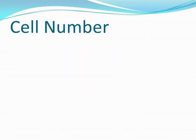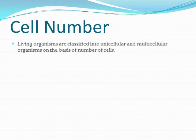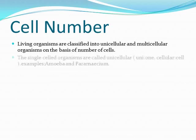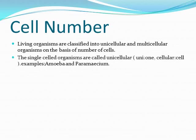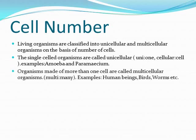Living organisms are classified into unicellular and multicellular organisms based on the number of cells. Organisms made up of only a single cell are called unicellular — examples are amoeba and paramecium. Organisms made up of more than one cell are called multicellular organisms. All other organisms, including human beings, are multicellular.